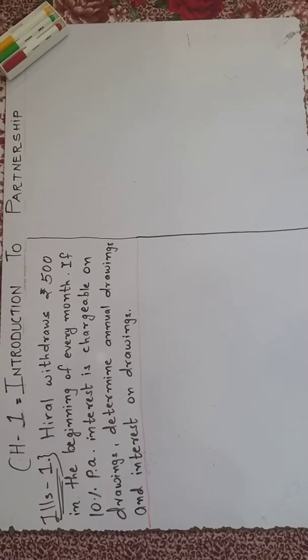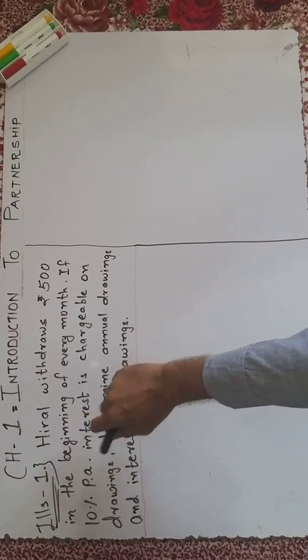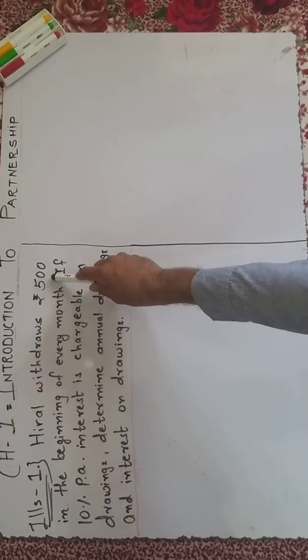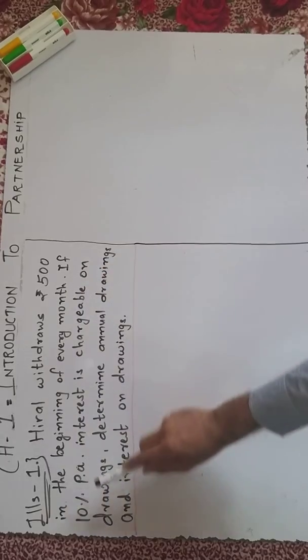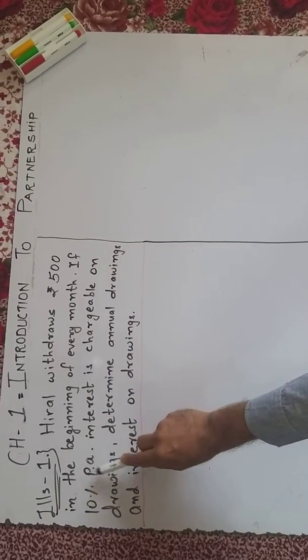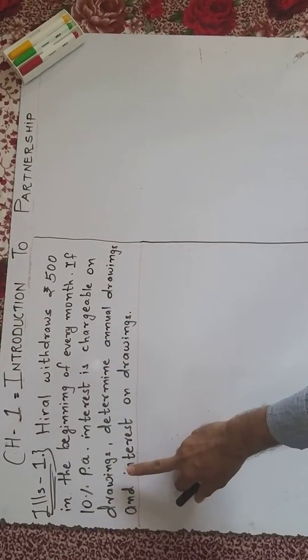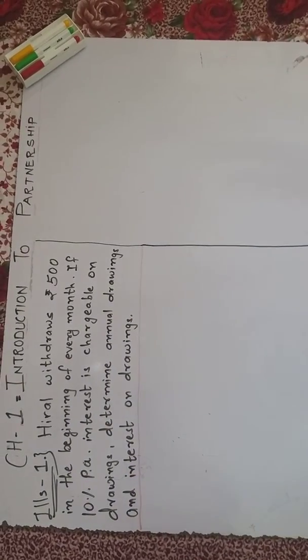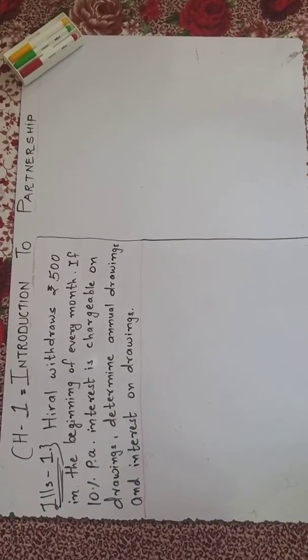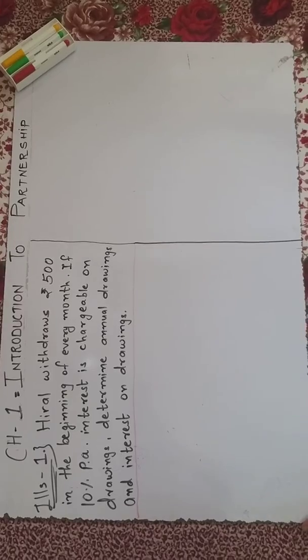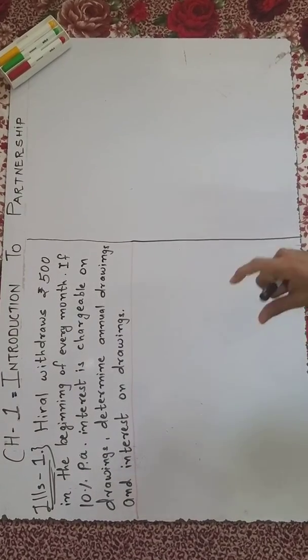Illustration one: A partner withdraws rupees 500 at the beginning of every month, and 10% annual interest is chargeable on drawings. In 11th standard we studied that a partner can make drawings - that means they withdraw goods or assets for personal use.